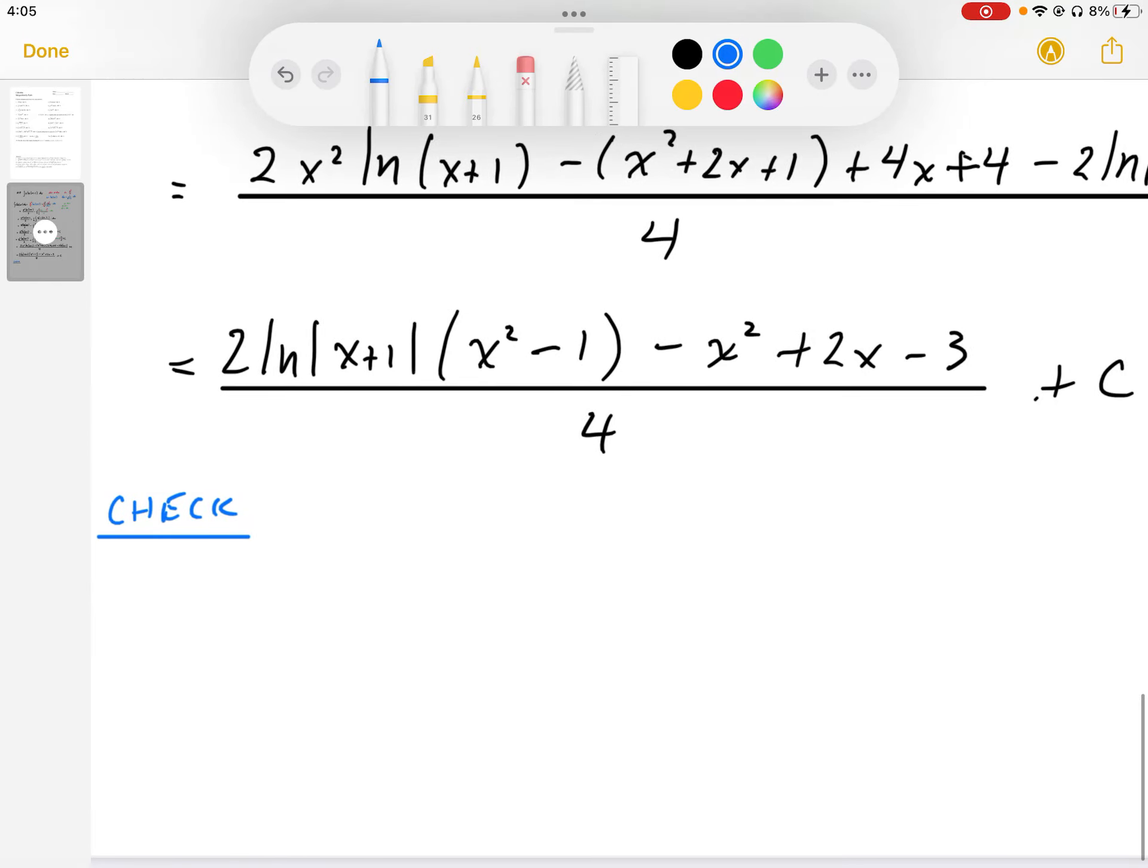We can differentiate this expression to check that we end up with the original. When I differentiate this, I'm going to differentiate the log part first. So I get 1 over x plus 1 times x squared minus 1 plus log of x plus 1.